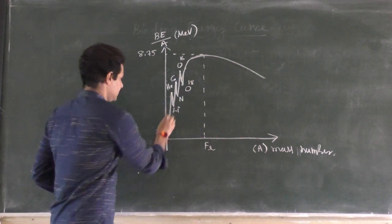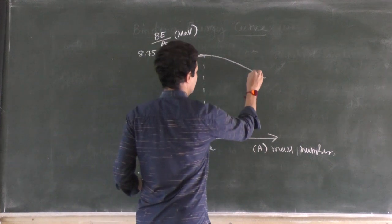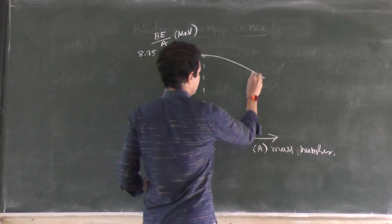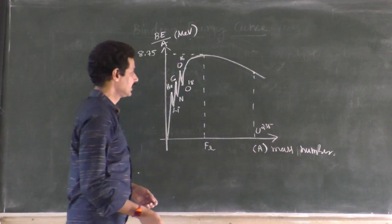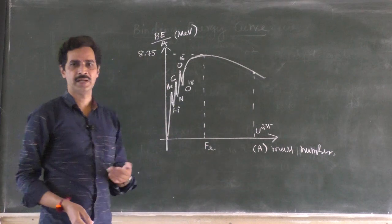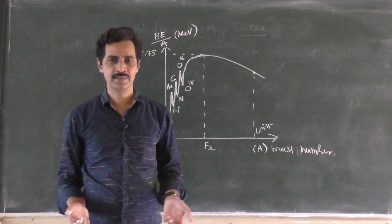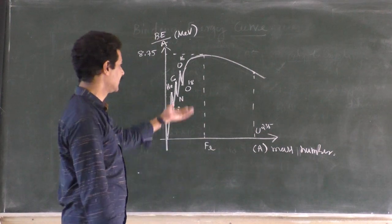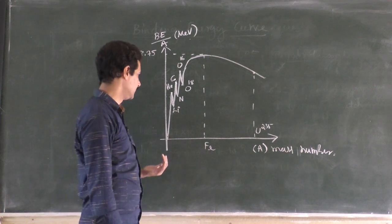For uranium-234 and uranium-235, the binding energy per nucleon is less — they are not stable. So what are the features of the binding energy curve? Once you draw binding energy per nucleon for different elements versus mass number, you get this curve. The conclusion is very simple: elements with very low mass number have very low specific binding energy, which means they are very unstable.